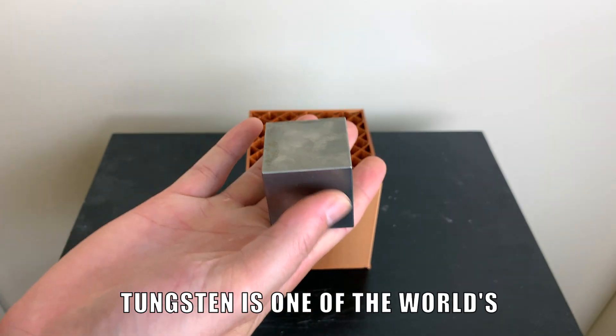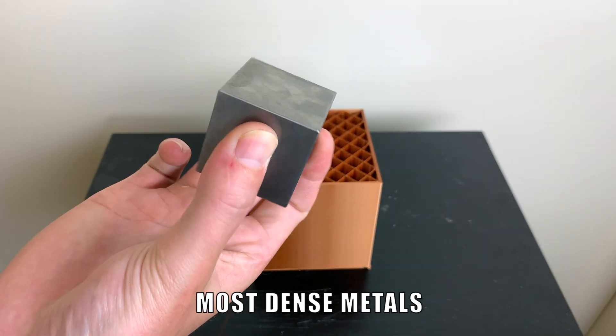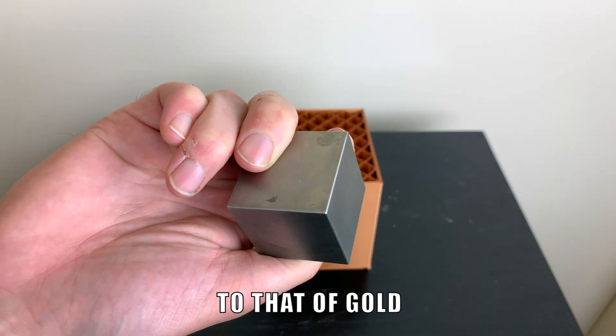This is a solid tungsten cube. Tungsten is one of the world's most dense metals. It has a density very similar to that of gold.